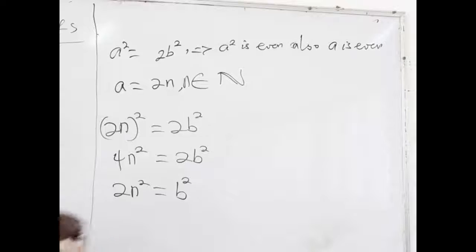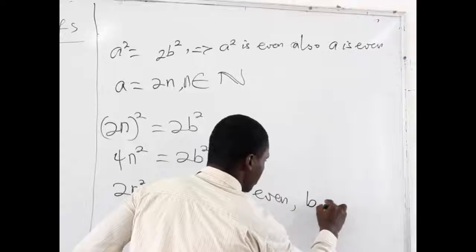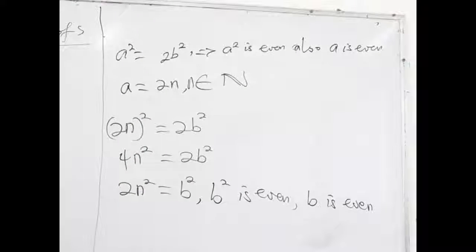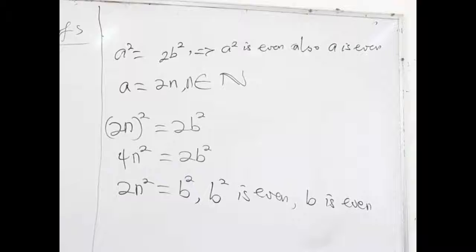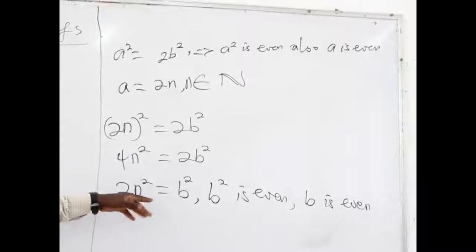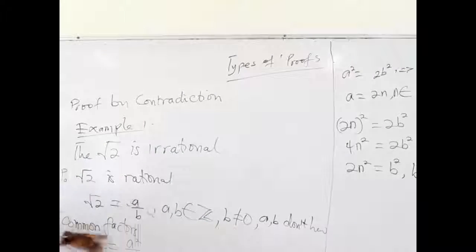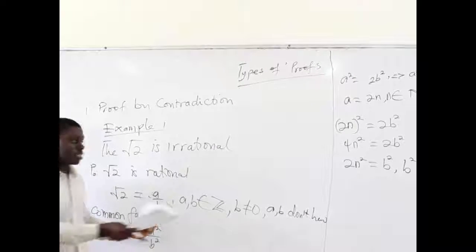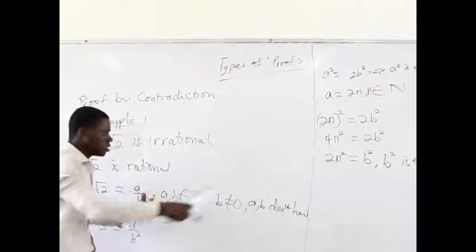Now, if B squared is even, it follows that B is also even. So B squared is even and B is even. Now A is even, B is also even. You will agree with me that when we have two even numbers with one dividing the other, it means they share common factors. So we have just shown that A and B are going to be even numbers, and for that reason they are going to have common factors. That is defeating our earlier hypothesis that A and B don't have common factors. So this is actually contradicting the statement we made that these numbers don't have common factors.